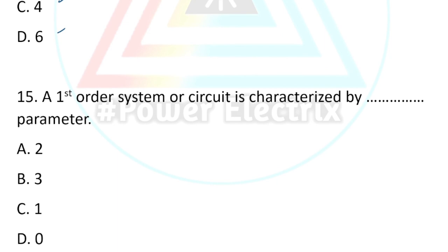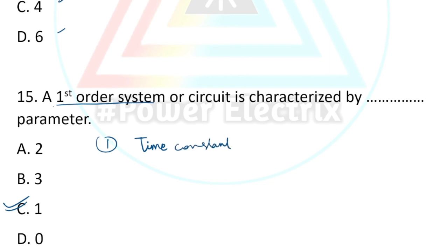Question number fifteen: A first-order system or circuit is characterized by how many parameters? The correct answer is option C, one parameter — and that single parameter is the time constant.